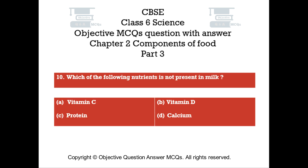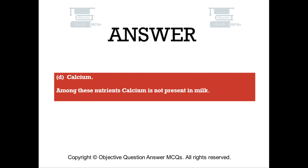Question number 10: Which of the following nutrients is present in milk? Option A: Vitamin C. Option B: Vitamin D. Option C: Protein. Option D: Calcium. The right answer is Option D — Calcium. Among these nutrients, calcium is present in milk.